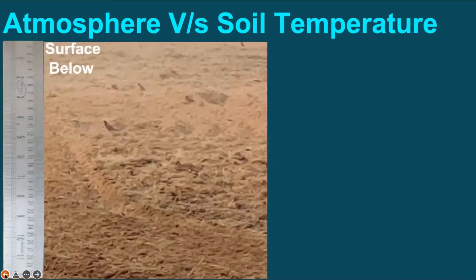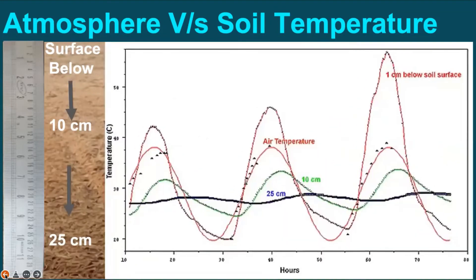Let us imagine the three layers of soil — the surface, 10 cm below the surface, and 25 cm below the surface. Now have a look at this graph depicting the effect of temperature on soil temperatures. The red line indicates the air temperature, while the brown, green, and black lines are for the effect of air temperature on soil surface at 1 cm, 10 cm, and 25 cm depths respectively.